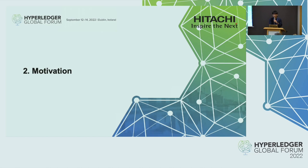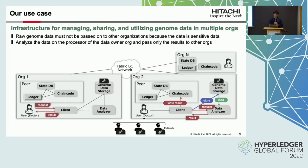I will explain our motivation for this presentation by introducing our use case. We created an infrastructure to manage and utilize genome data across multiple organizations. In this use case, multiple organizations participate in a blockchain network for genome data sharing. Importantly, raw genome data must not be passed to other organizations because it is sensitive. Therefore, data is analyzed on the processor of the owning organization, and only the results are passed to other organizations.